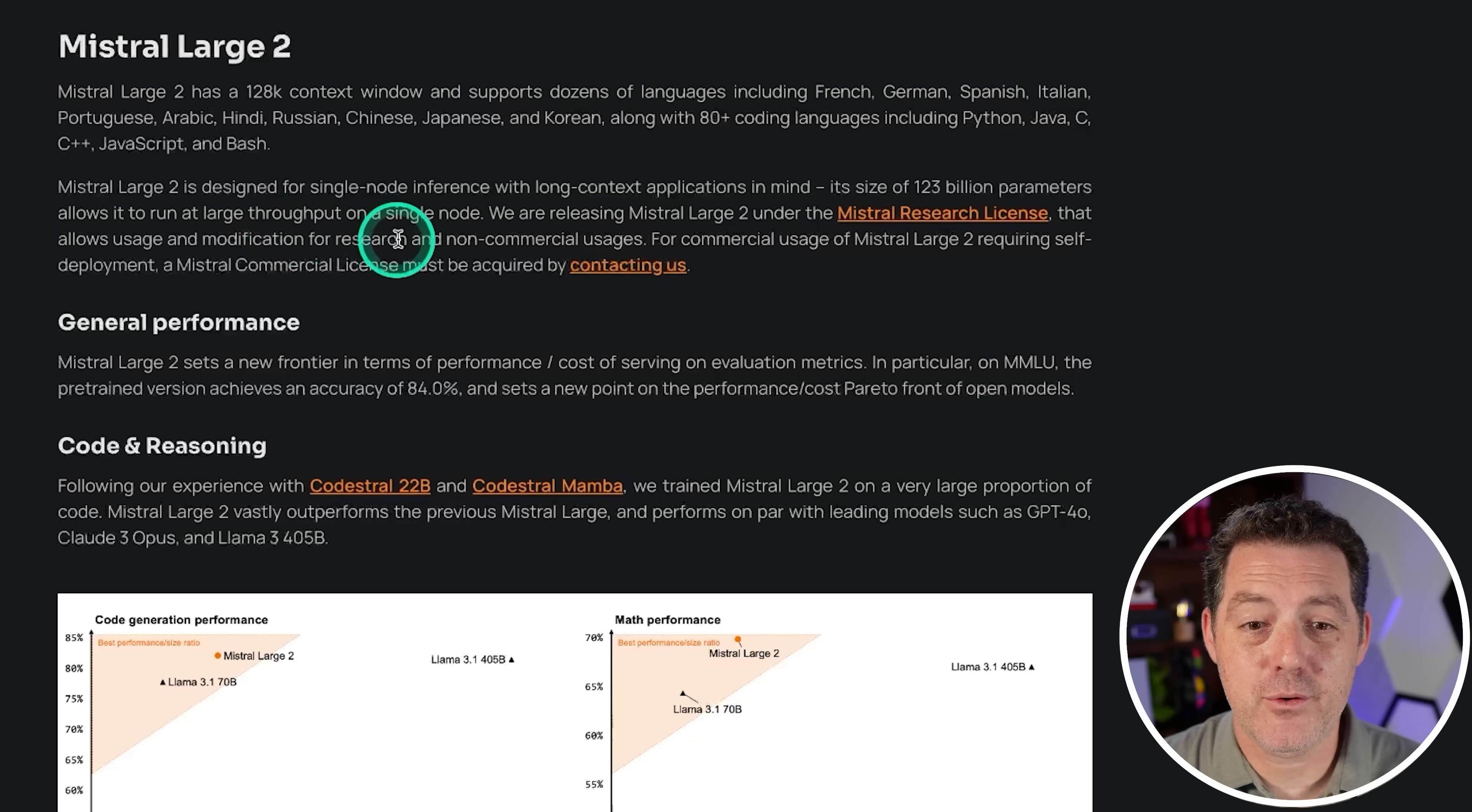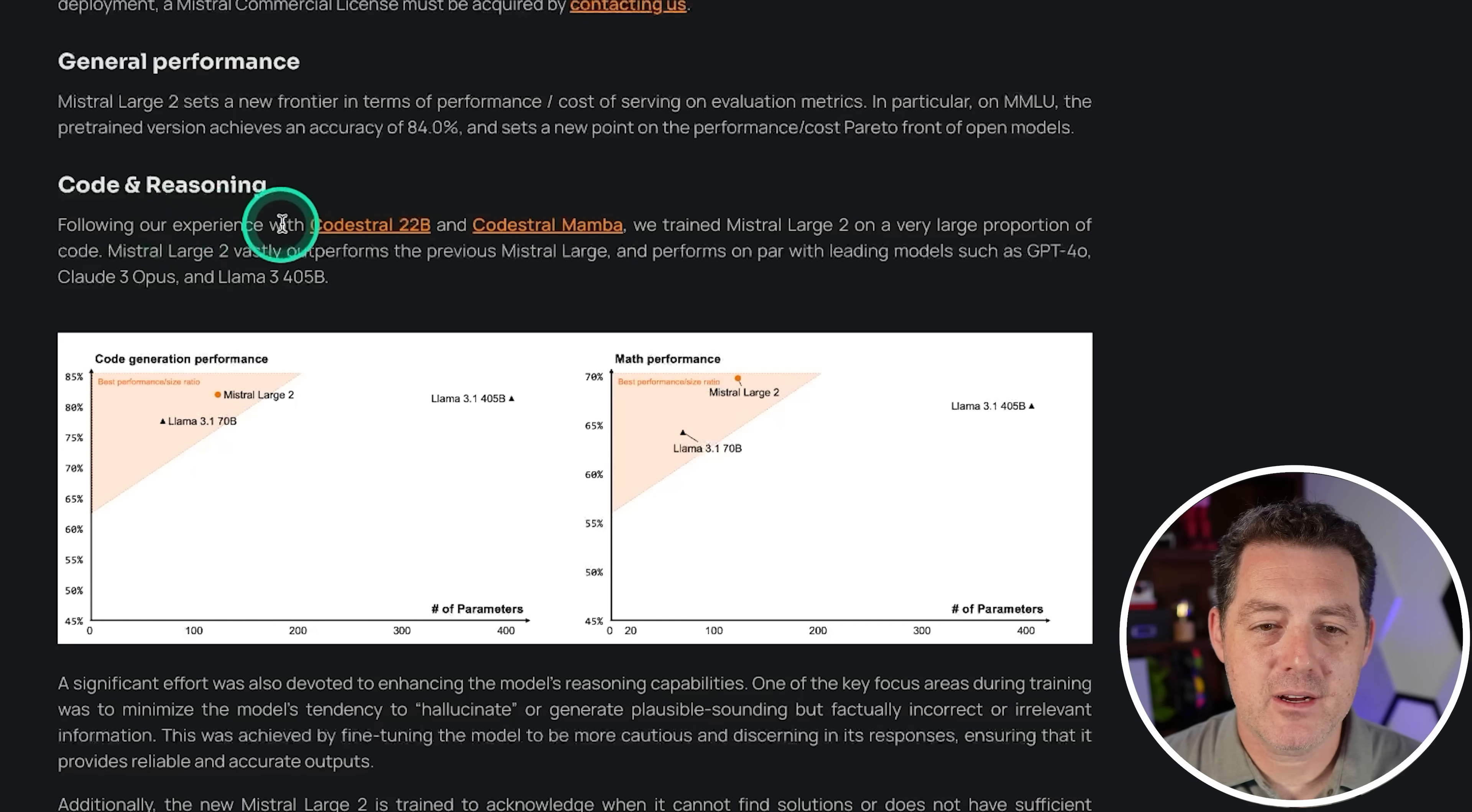It allows for usage and modification for research and non-commercial usages. For commercial usage of Mistral Large 2 requiring self-deployment, the commercial license must be acquired. Large 2 sets a new frontier in terms of performance cost of serving on evaluation metrics. In particular, MMLU 84%, which is great. Following our experience with CodeStroll 22B and CodeStroll Mamba, we trained Mistral Large 2 on a very large proportion of code. So this is hopefully going to be a really good coding model.